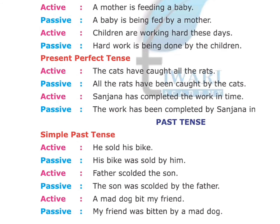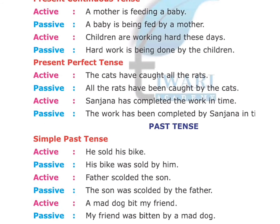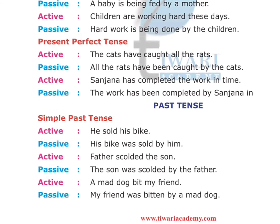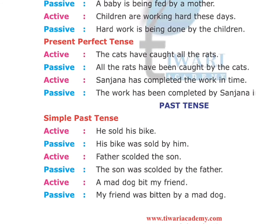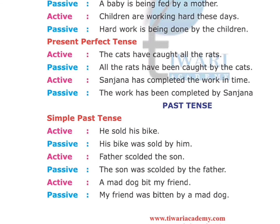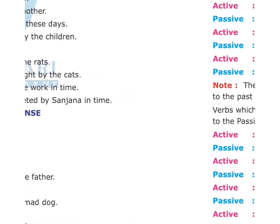Simple past tense. Active: 'He sold his bike.' Passive: 'His bike was sold by him.' In past tense, we use was/were according to the subject, followed by verb in third form. More examples — Active: 'Father scolded the son.' Passive: 'The son was scolded by the father.' Active: 'A mad dog bit my friend.' Passive: 'My friend was bitten by a mad dog.'